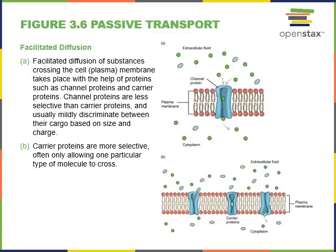Water-soluble chemicals that cannot diffuse through the plasma membrane can cross via facilitated diffusion, where a channel protein embedded in the membrane creates a pore that allows a water-soluble chemical to diffuse from an area of higher concentration to lower concentration.